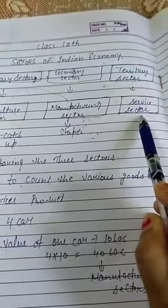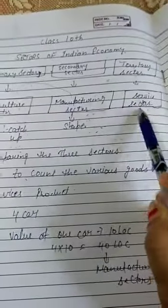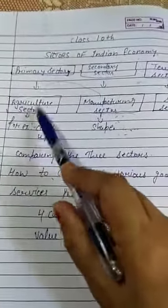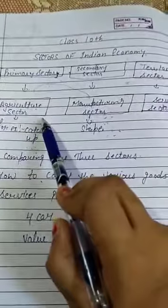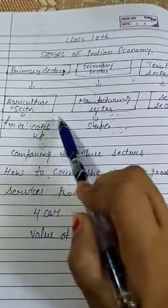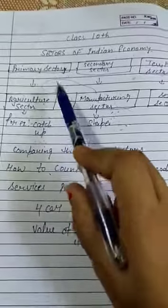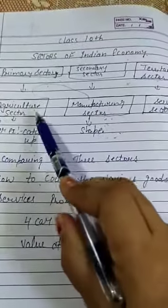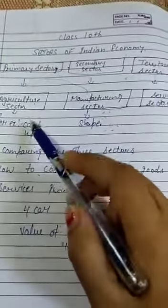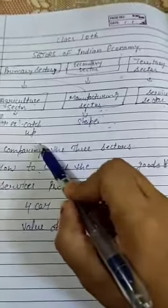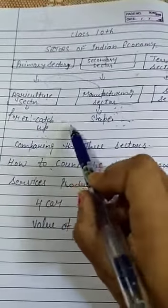Tertiary sector is also called service sector. First of all, what's the meaning of primary sector? It forms the base for all other products. For example, like a tomato we need to make ketchup.